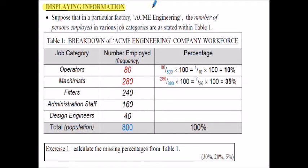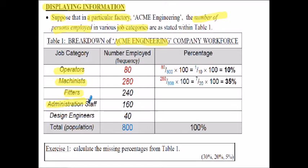Displaying information - this section will look at some basic ways of presenting data to an audience. Suppose that in a particular factory we have a number of persons employed in various job categories as stated in the table below. In this engineering company we have categories of operators, machinists, fitters, administration staff and design engineers.